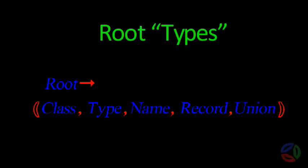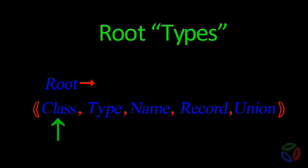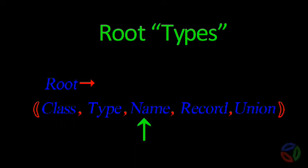Root types are always the last part of the shared type specifications which immediately precede the colon. These can be any of the following: class, type including predefined types, name, record, or union.